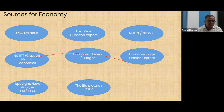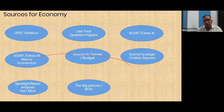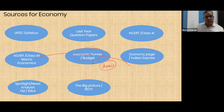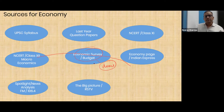Economic survey and budget are the only two documents provided by the government, and they cover everything related to the economy that happens in a year. They are very critical for understanding the economy. Many direct questions are coming from the economic survey — not only in Prelims but also in Mains — because many times the answers to certain questions are only in the economic survey.